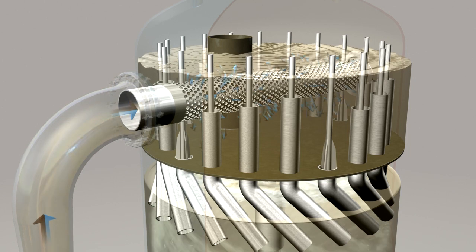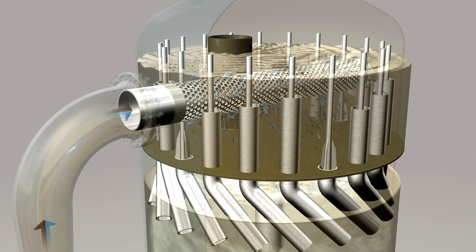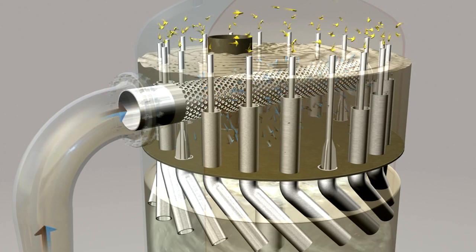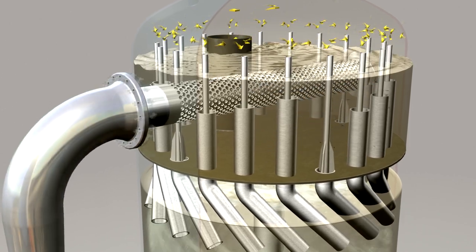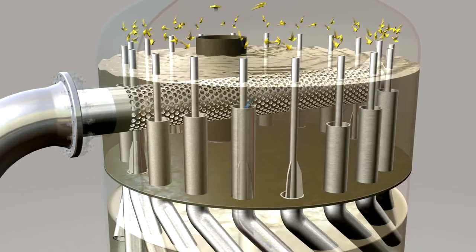Produced water enters the CFU vessel via the inlet pipe and is dispersed across the top chamber by the distributor. At this point, the majority of any entrained gas is released, as shown by the yellow arrows.